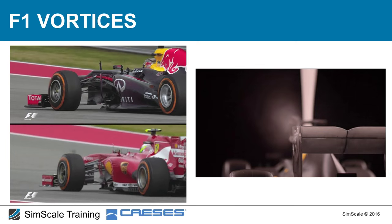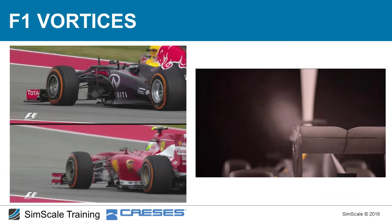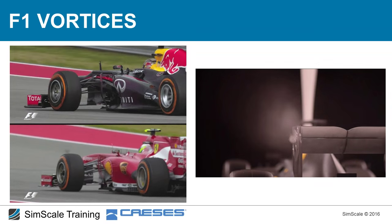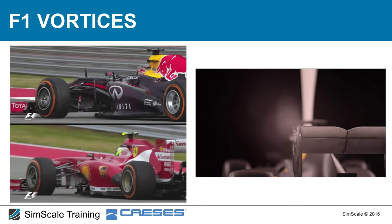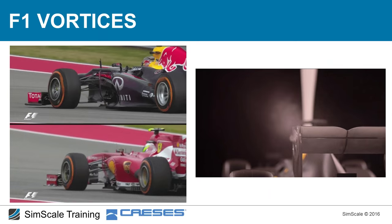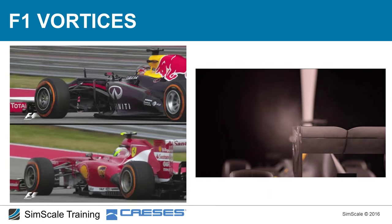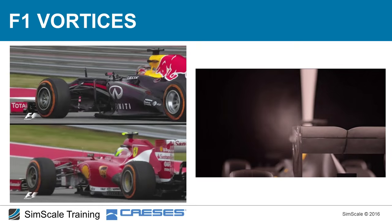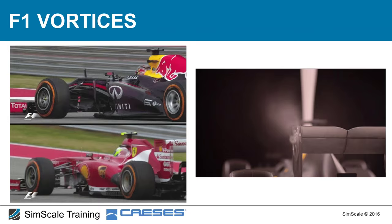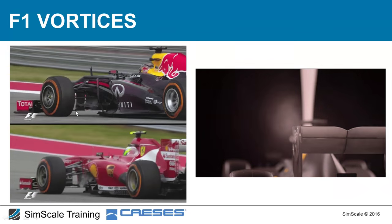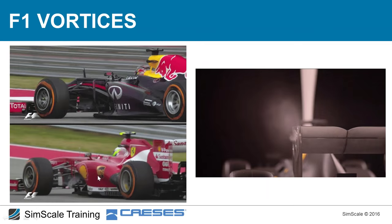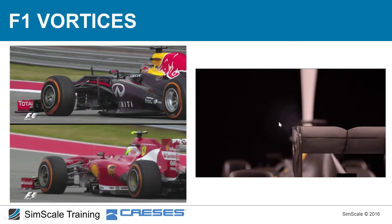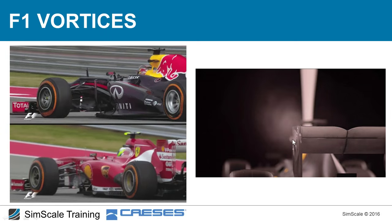We've covered the different car parts and aerodynamic concepts, including pressure and force distributions. In Formula 1, vortices are critically important due to the many sharp edges and shape discontinuities across the car. CFD visualization shows the Y250 vortex from the front wing and the rear wing tip vortices created by the end plate slots.